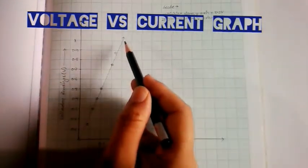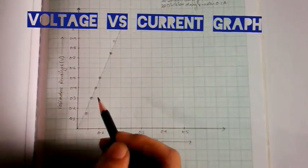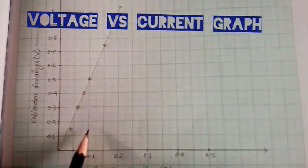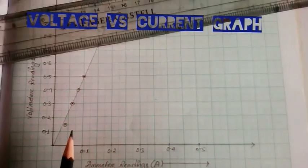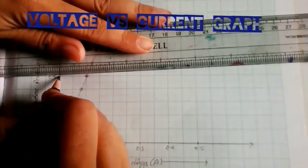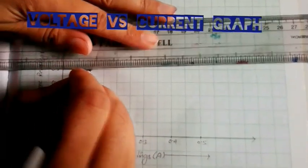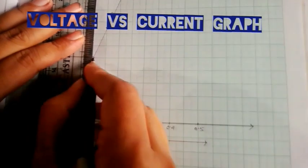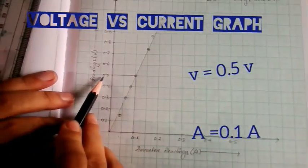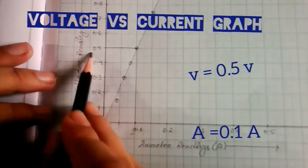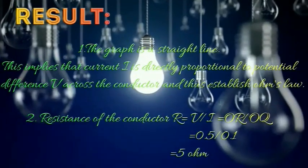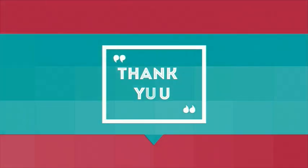This graph gives the value of resistance. An arbitrary point is taken at 0.2. The X axis reading is 0.1 ampere and the Y axis reading is 0.5 volt. From the graph, resistance equals V divided by I, which gives 5 ohms.